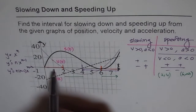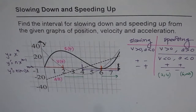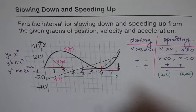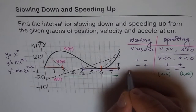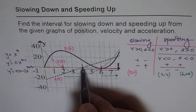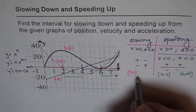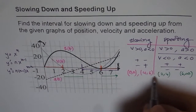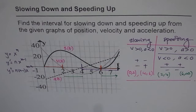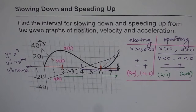In the other portions: here, velocity is positive but acceleration is negative — different signs — so it is slowing down from 0 to 2. Similarly, in another portion, acceleration is positive but velocity is negative, so they are slowing down between 4 and 6. Remember: if velocity and acceleration are both positive or both negative, that means speeding up; otherwise, it is slowing down. Thank you.